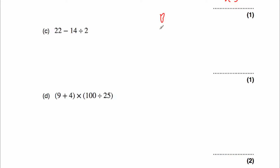Question 14c: 22 take away 14 divided by 2. We do the division first: 14 divided by 2 is 7. Then 22 take away 7 is 15. Our answer is 15.